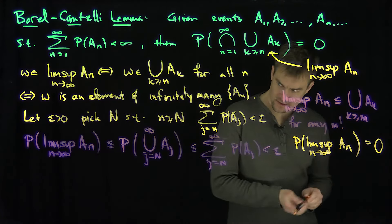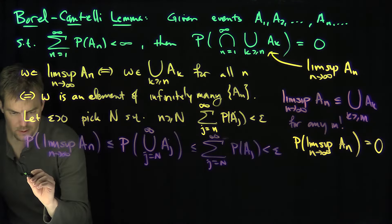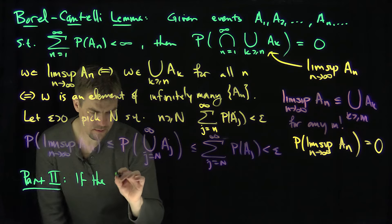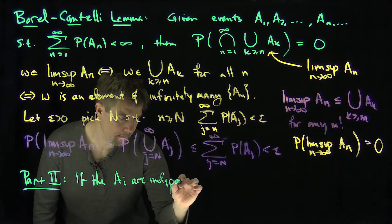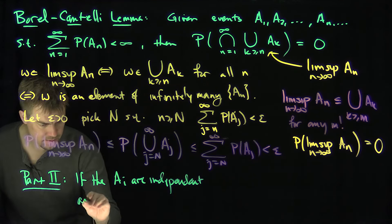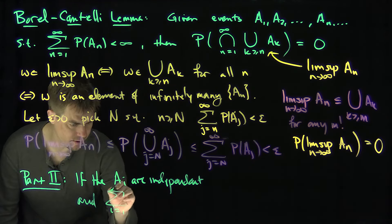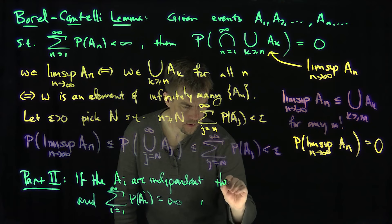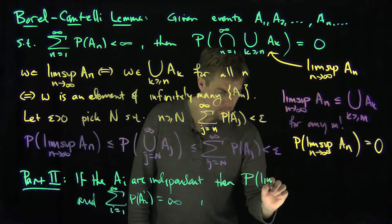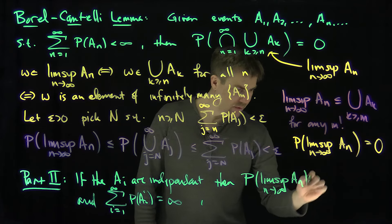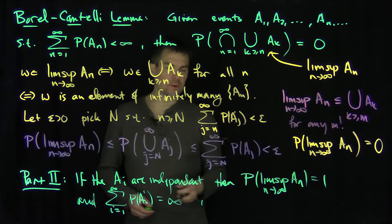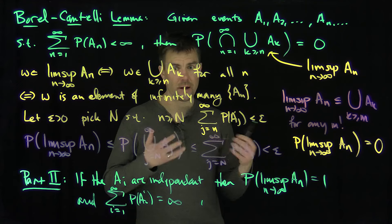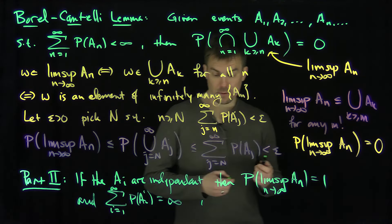The second part of the Borel-Cantelli Lemma says the following. Part two: if the AI are independent, and the sum of the probabilities, i goes from one to infinity, of the probability of AI is equal to infinity, then the probability of the limsup as n goes to infinity of AN is equal to one. The way you do this is by considering the infinite product corresponding to the complement of these ANs, and showing that the complement of that product diverges to zero.